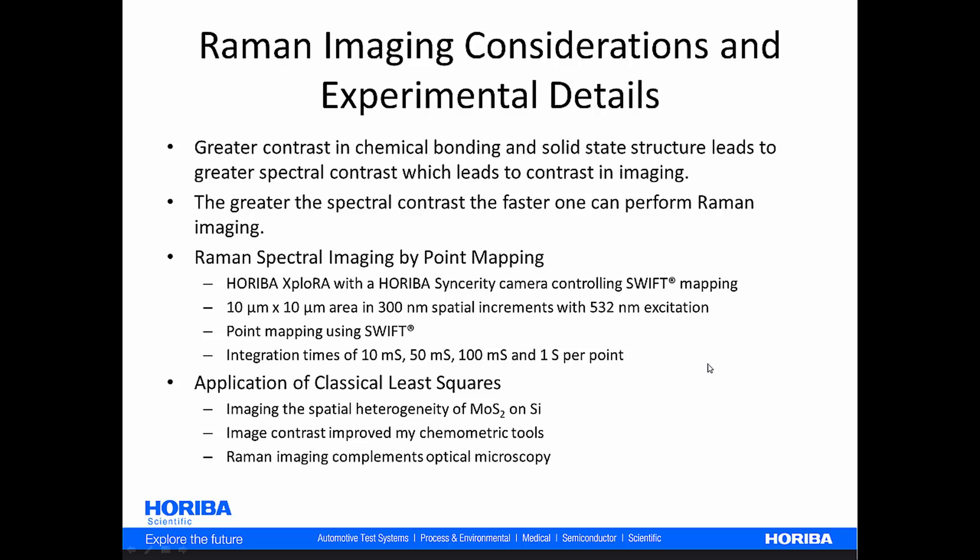The data that I will be showing you today and the images generated from them were acquired using a Hariba Explorer Raman spectrometer. And with the Hariba Sincerity camera that for the 100, the 50, and the 10 millisecond integration times were controlled by SWIFT. And on the next slide I'll explain what the SWIFT mapping is. The areas that we mapped are 10 by 10 micrometer areas in 300 nanometer spatial increments with 532 nanometer excitation.